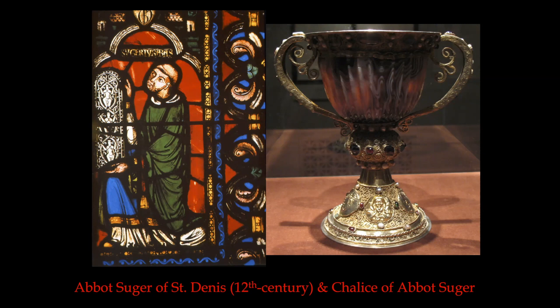Suger became a great patron of the arts, and Suger loved shiny things. He tells us about the goldsmiths, jewel setters, and silversmiths making art to embellish his church. He had a beautiful chalice made that he used to conduct mass — he was also an ordained priest. Suger was not a greedy man; he had never had to worry about a paycheck in his life. For him, gold and silver and jewels reflected God's magnificence and were a worthy way of ornamenting the church that honors God here on earth.